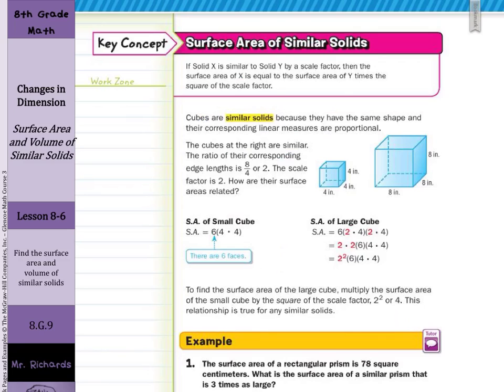Now cubes are similar solids because they have the same shape and the corresponding linear measures are proportional. The cubes at the right are similar. The ratio of their corresponding edge lengths is 8 over 4 or 2. Notice they took 8 over 4 which is 2. The scale factor is 2. So to find how their surface areas are related, you're going to multiply by 2 squared which is 4. That's going to be true for any similar solids.